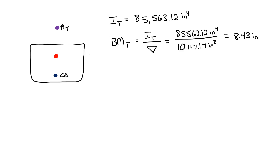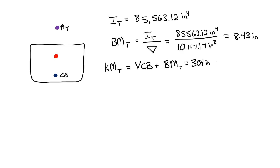Since I know the distance from my center of buoyancy to my metacenter, and I already know my center of buoyancy distance from the keel of the boat, we're going to now find the distance from the keel to the metacenter — KM subscript t. This is simply the vertical center of buoyancy plus the metacentric radius. My vertical center of buoyancy was 3.04 inches above my baseline, and therefore my metacenter is 11.47 inches above my baseline.